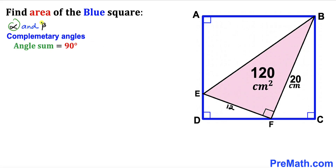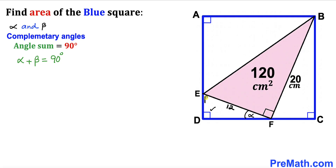Next, let's assume that alpha and beta are two complementary angles — that is, alpha plus beta equals 90 degrees. Focusing on right triangle FDE, let's assign this angle as alpha. Since we have a 90-degree angle, the remaining angle must be beta.